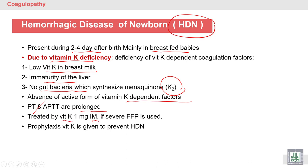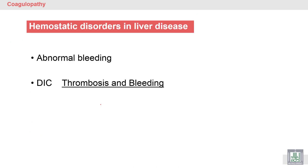The treatment of this condition is vitamin K intramuscular injection. If severe, we give the baby fresh frozen plasma to provide factors II, VII, IX, and X. Prevention or prophylaxis is by giving vitamin K to babies to prevent HDN. HDN is a hemorrhagic disease with bleeding from many sites in the baby in the first few days due to vitamin K deficiency.